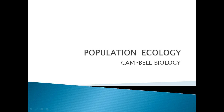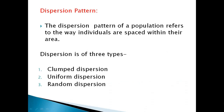Hello. The topic is population ecology, taken from Campbell Biology. I'm going to discuss the dispersion pattern of population. Dispersion means the distribution pattern of a population. The dispersion pattern refers to the way individuals are placed within their area — how individual species are placed in a particular area. The literal meaning of dispersion is distribution.